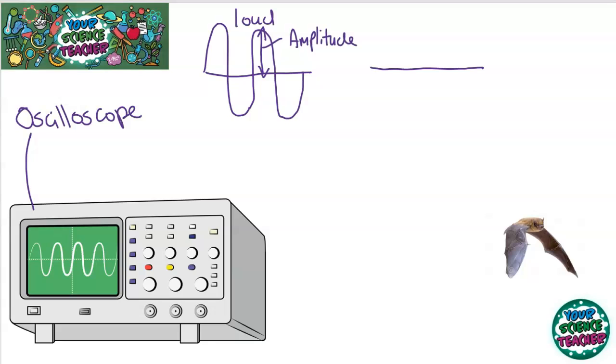If the sound is really quiet, like a mouse, then the amplitude is really, really low.